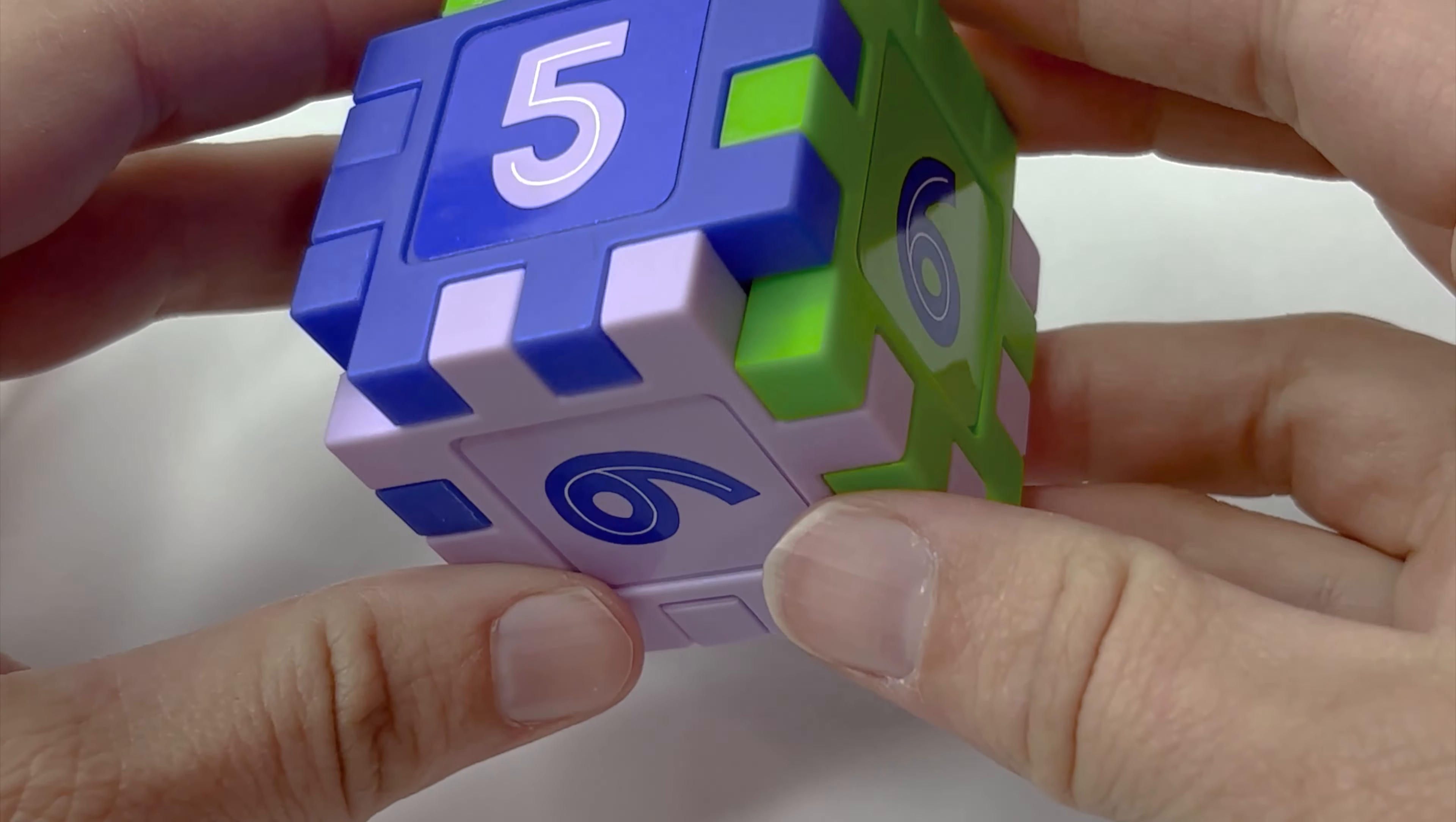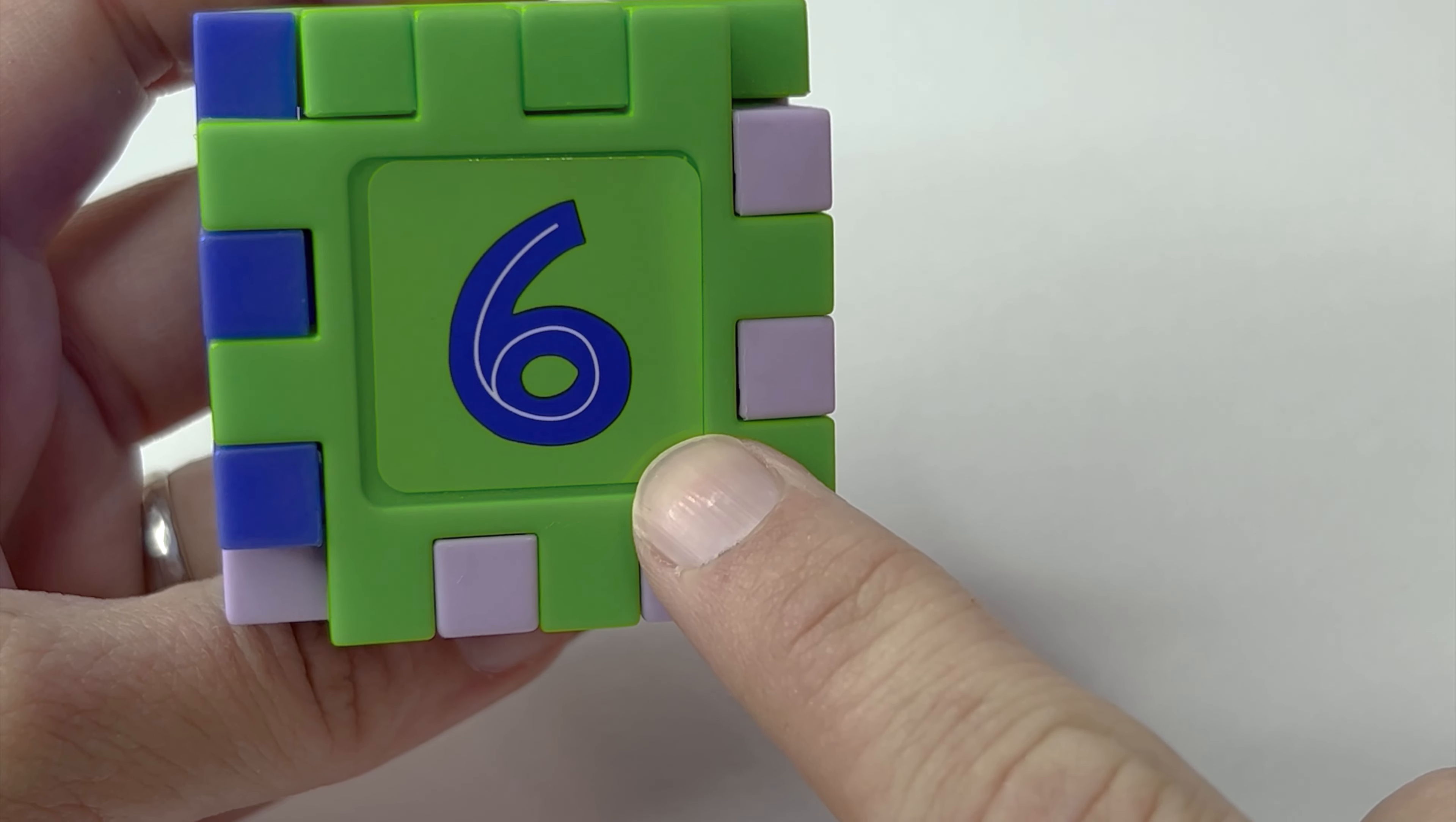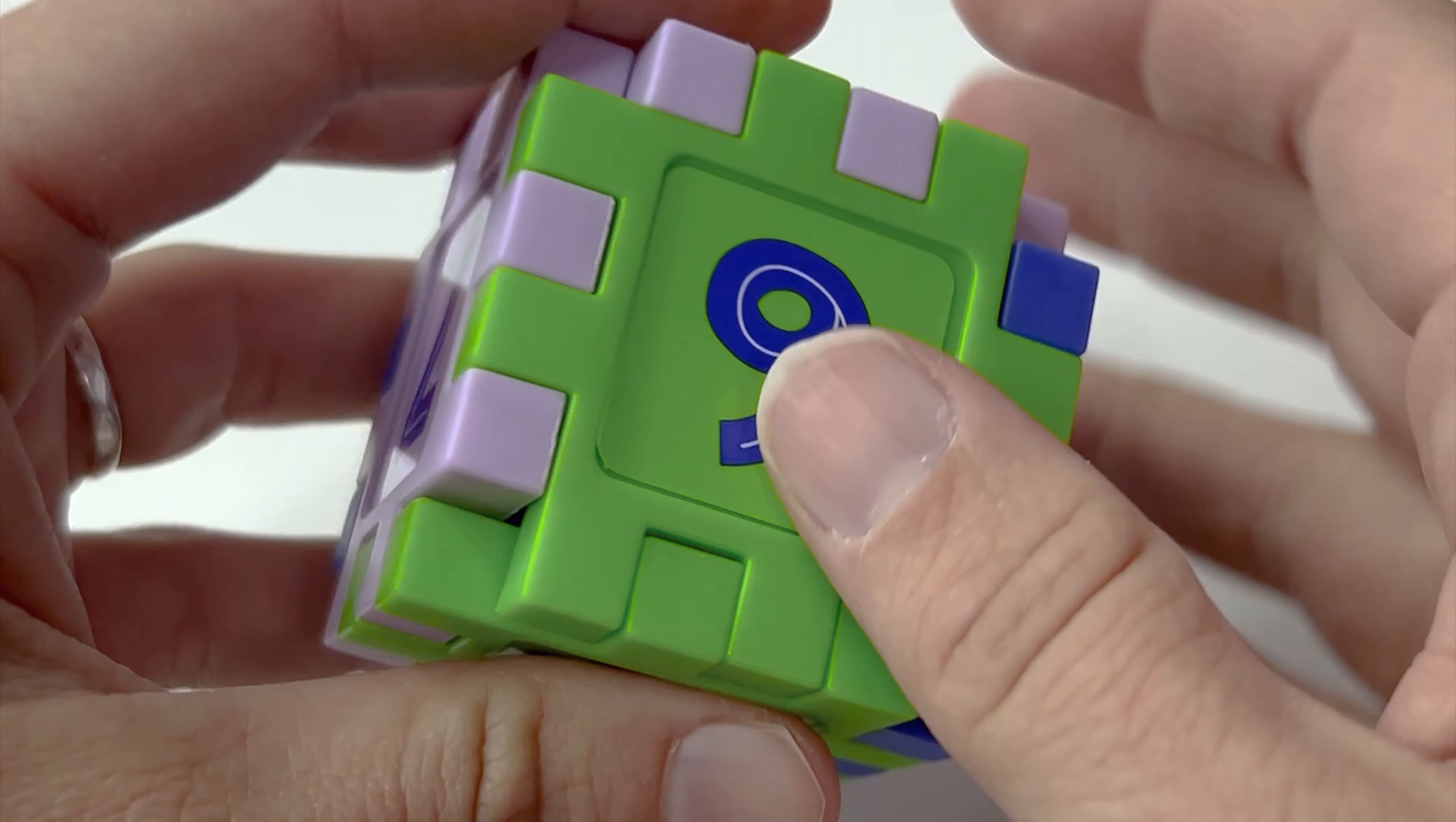Oh wow, look. We have another number cube. There's something hiding in there too. We have the number five, the number six, seven, eight, nine. Let's see what's inside.